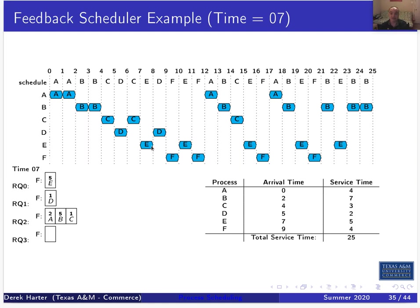At time eight, nothing arrives and E goes down to priority level one. D is at the front of priority level one and gets scheduled. At time nine, F arrives and D is finished — it exits the system. There's a lot of bookkeeping especially with small time quantums when simulating by hand.